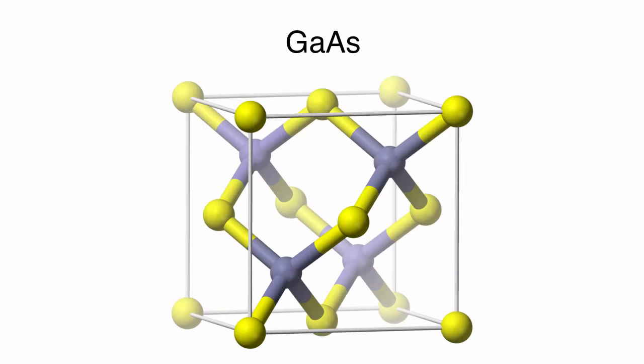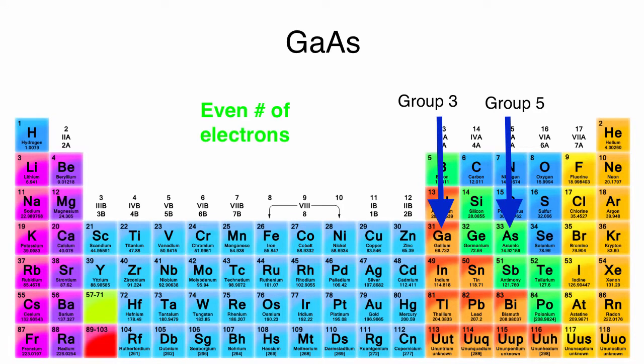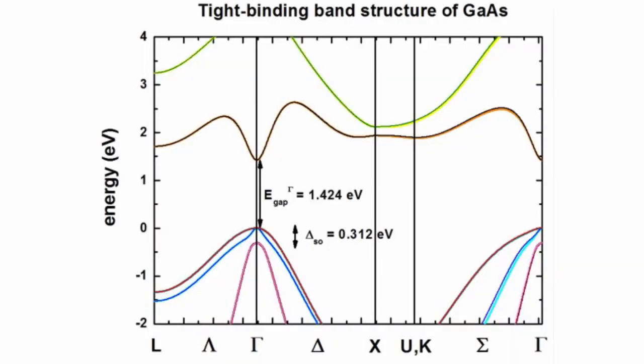How about if we looked at gallium arsenide? Well, together, gallium and arsenic bring eight valence electrons to the table. So again, we have an even number, and I'm going to go with an insulator, or maybe a semiconductor. That's a reasonable guess, and it turns out gallium arsenide is a semiconductor with a gap between the filled and empty bands of about 1.4 eV.